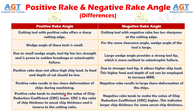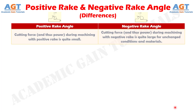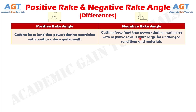Number 6: Positive rake tends to maintain the value of chip reduction coefficient lower. Chip reduction coefficient is the ratio of chip thickness to uncut chip thickness and is inverse to the cutting ratio, whereas negative rake tends to make the value of chip reduction coefficient higher. This indicates larger chip thickness for the same uncut chip thickness. Number 7: Cutting force, and thus power, during machining with positive rake is quite small, whereas cutting force and thus power during machining with negative rake is quite large for unchanged conditions and materials.